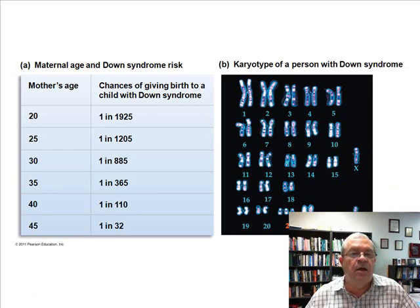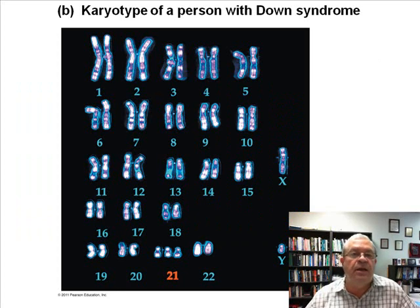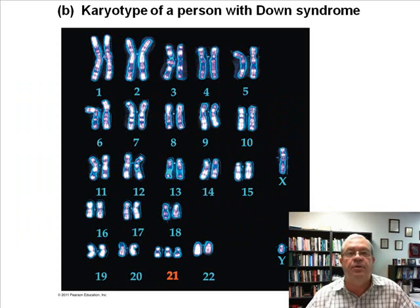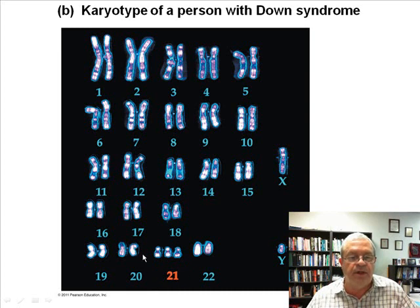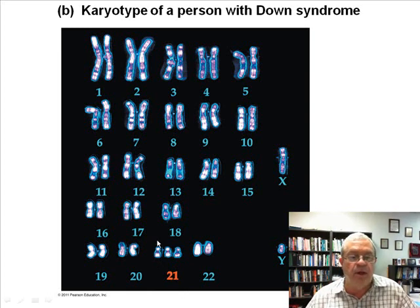Here are pictures from the book about Down syndrome. Let's look at the karyotype of a person with Down syndrome. These analyses are called karyotypes — chromosomes spread out, sorted, and analyzed. The abnormality is in chromosome number 21. Instead of two, there's an extra chromosome 21, and this extra chromosome produces the symptoms associated with Down syndrome.